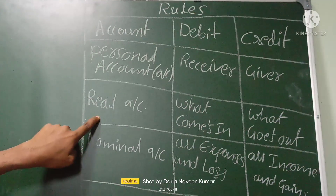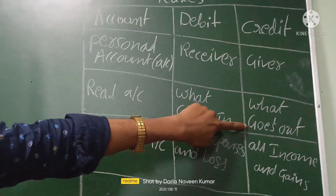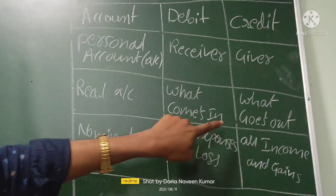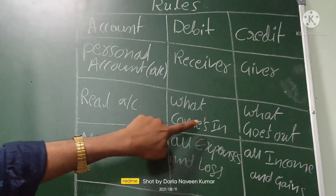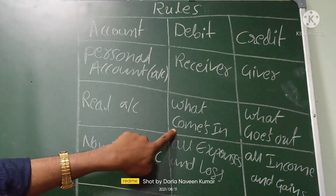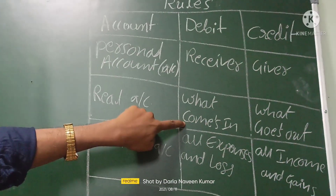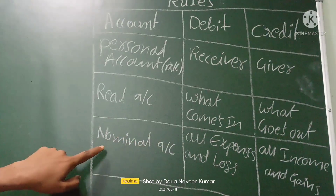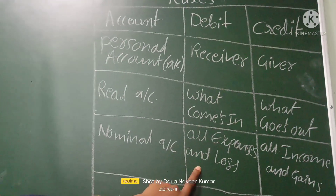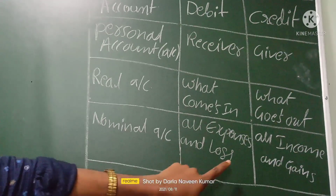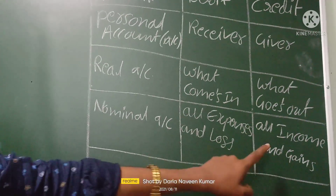For real account: what comes in is debit, what goes out is credit. Real account contains assets — when an asset comes into the business it is debit; when an asset goes from the business it is credit. For nominal account: all expenses and losses are written on the debit side, and all incomes and gains are written on the credit side. These are the debit and credit rules — we must remember them compulsorily.